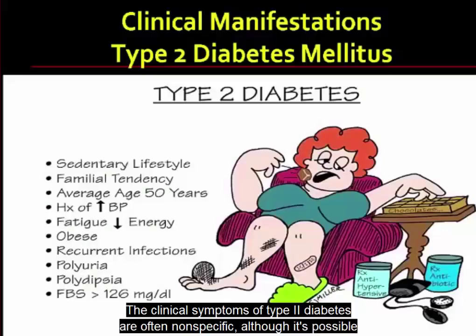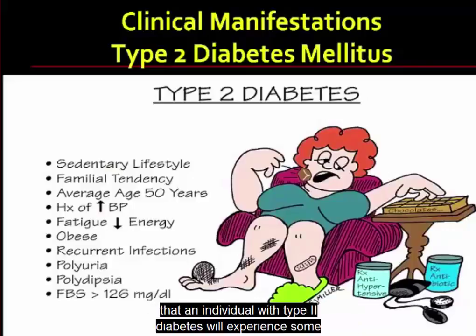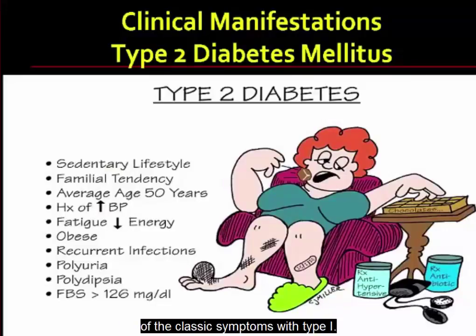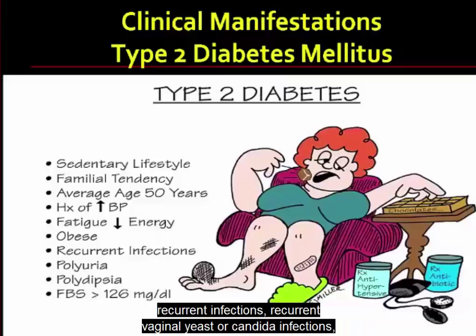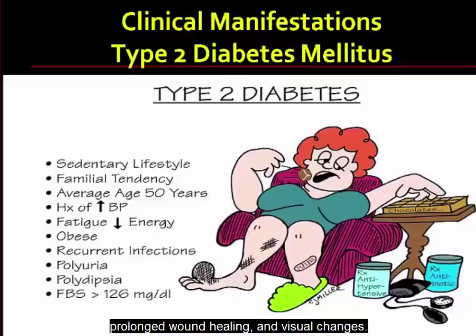The clinical symptoms of type 2 diabetes are often nonspecific, although an individual with type 2 diabetes may experience some classic symptoms seen in type 1. Some of the more common symptoms associated with type 2 diabetes are fatigue, recurrent infections, recurrent vaginal yeast or Candida infections, prolonged wound healing, and visual changes.